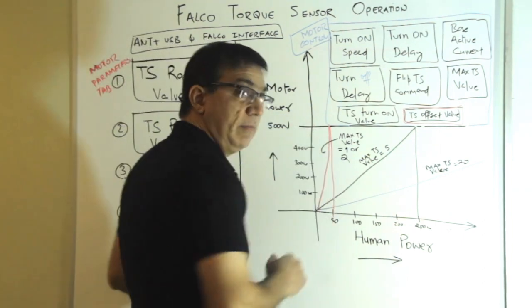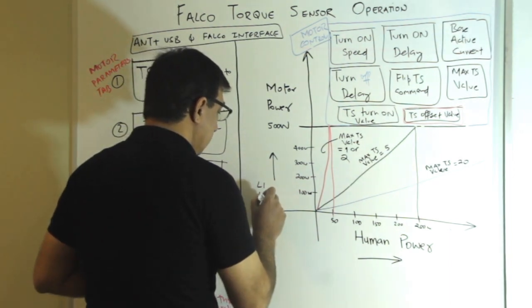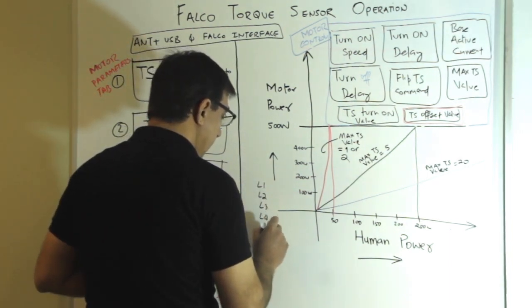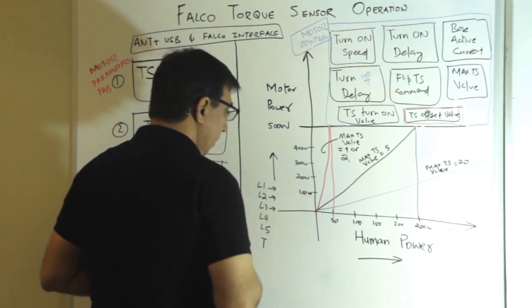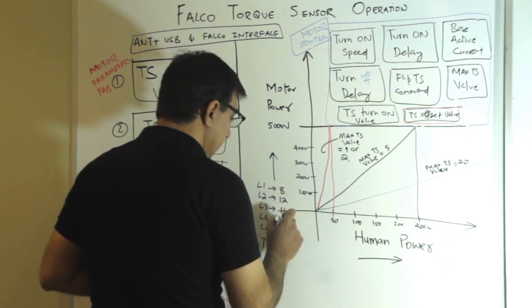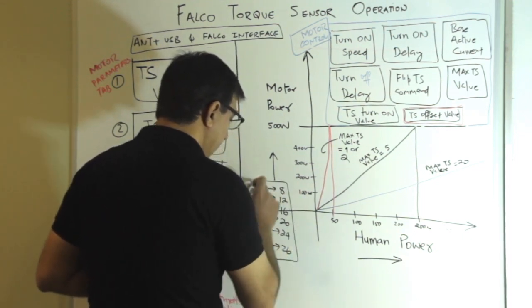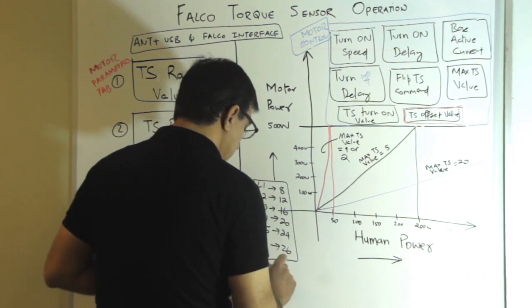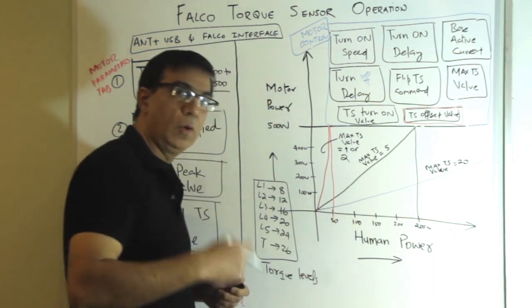Now, you have got the different levels: level 1, level 2, level 3, level 4, level 5, and then a turbo mode. These control the torque. For a 500 watt motor, this is about 8, then this is about 12, this is about 16, this is about 20, 24, and then you have 26. So these are the different torque levels, not the power levels, torque levels, when you control the assistance.